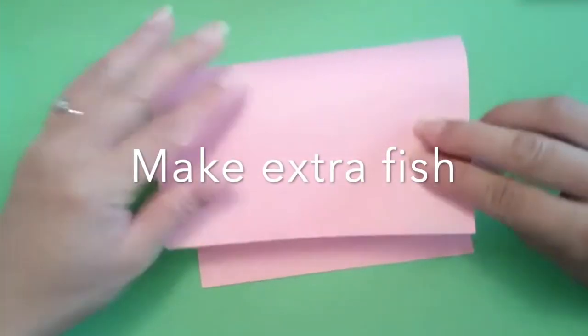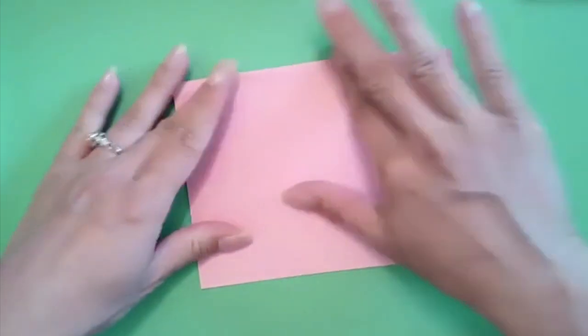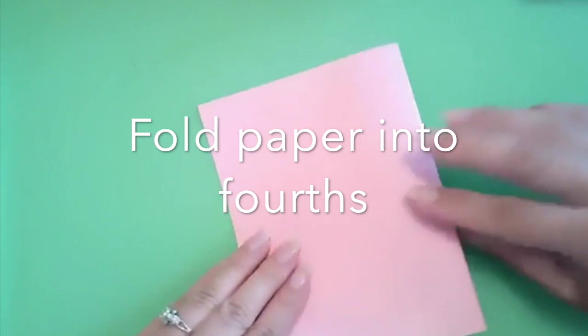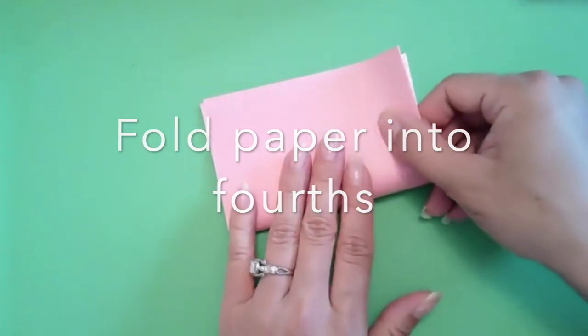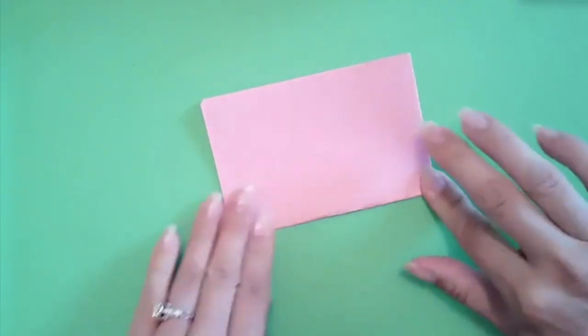You can let your child choose the color of construction paper that they like for the extra fish. I chose to fold mine into fourths so that I had enough for two kids.